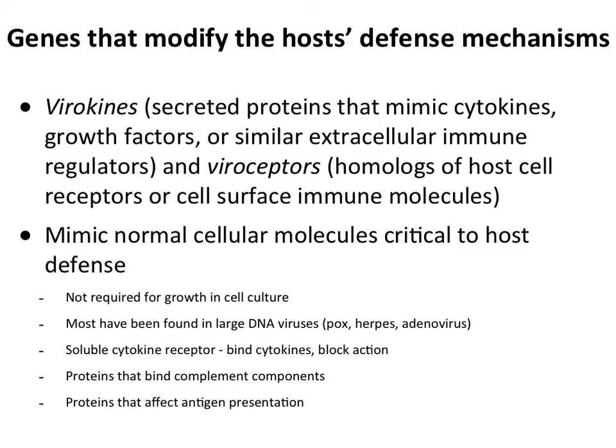What kinds of proteins modify host defense mechanisms? Some are called virokinds — secreted proteins produced by the virus that mimic cytokines, growth factors, or extracellular immune mediators. They bind receptors but don't transduce the signal, interfering with the immune response. Some viruses also make homologues of cytokine receptors — viral receptors — which are soluble and bind cytokines or chemokines, preventing them from acting. These molecules mimic cellular molecules critical to host defense. When they're present, the virus overcomes host defenses; when you take them away, the virus is cleared.